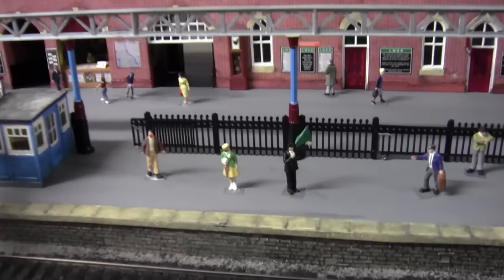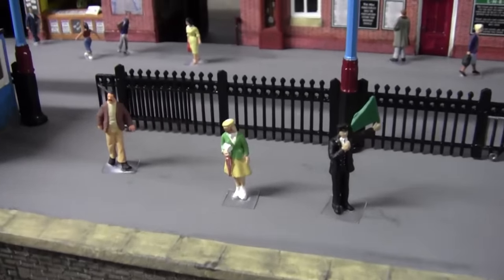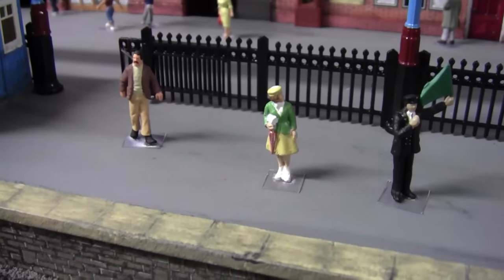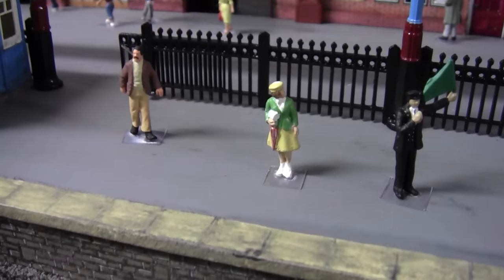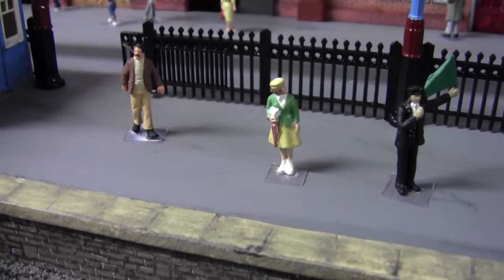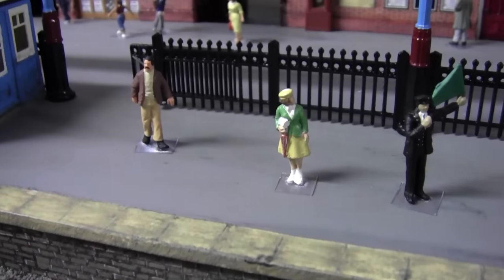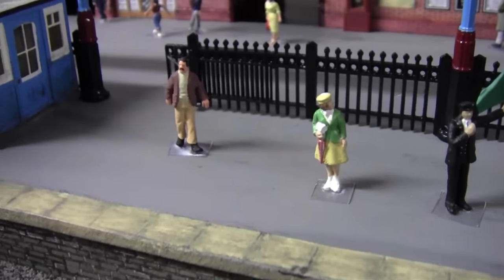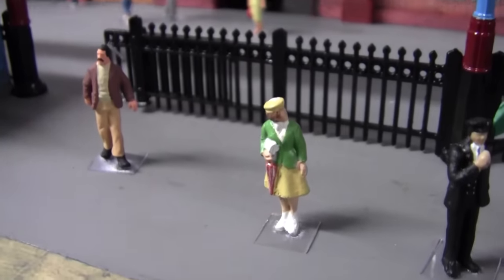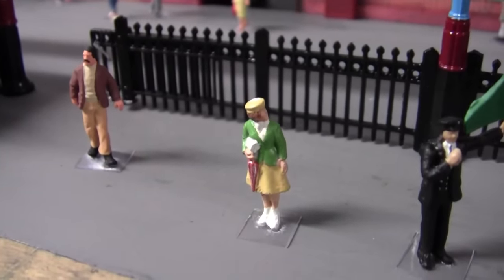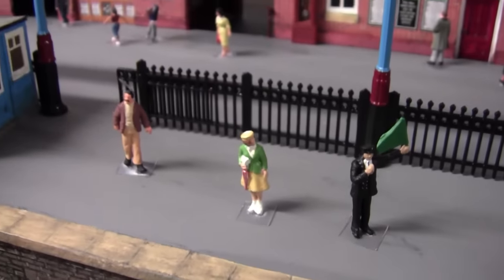I painted this young lady here with a brolly. She's a Dapol figure. I cut her out of the set and decided to paint a figure just for a change really. As you can see she's got a brolly, another figure with a brolly.